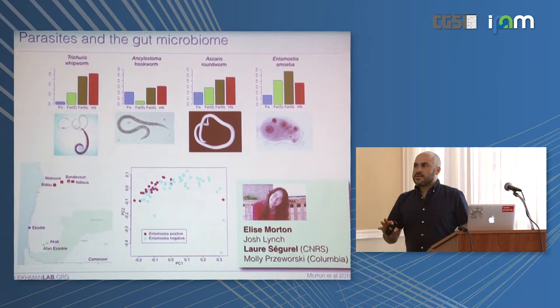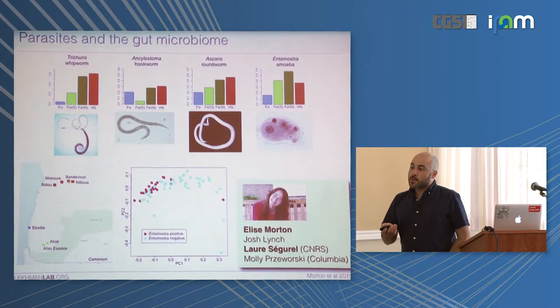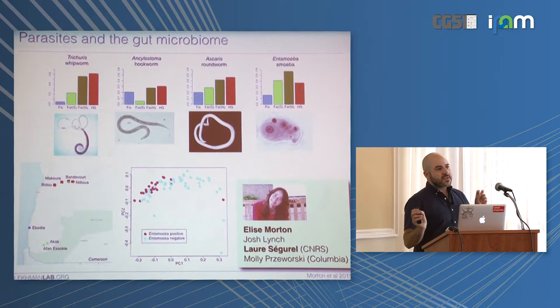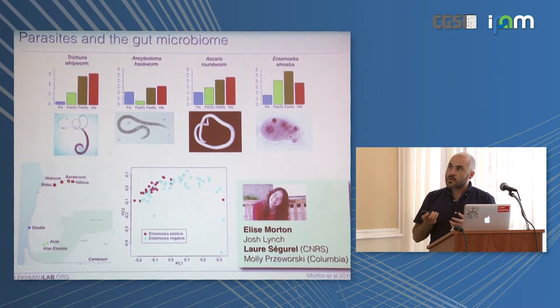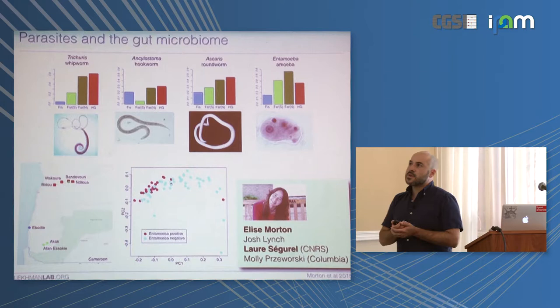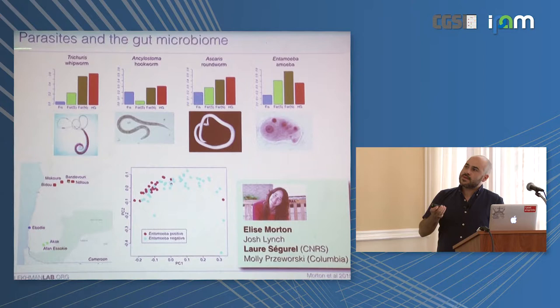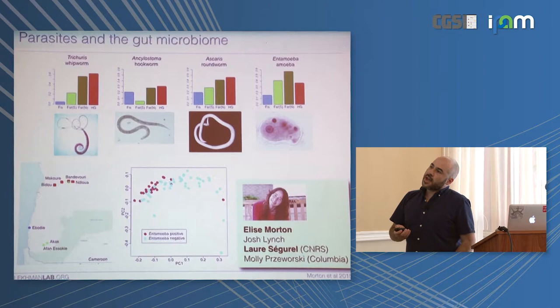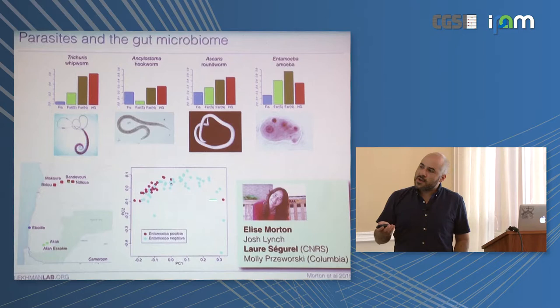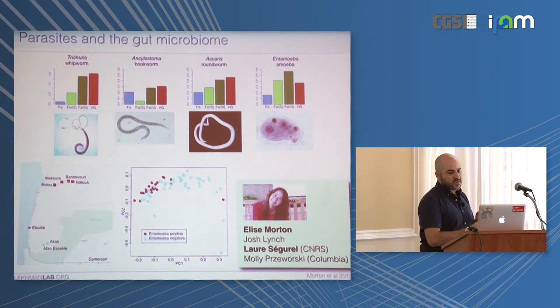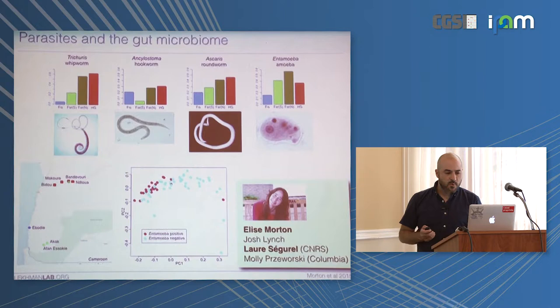Another short study, by Elise Morton with Lore Segurel from the CNRS, looked at the effect of other flora found in the gut — specifically parasites — in African populations. We quantified the amount of parasites and found that a single parasite, Entamoeba, had the strongest effect on the gut microbiome — stronger than diet and stronger than everything else we looked at. This is something important to consider in microbiome studies.